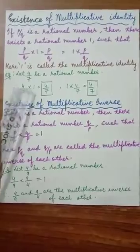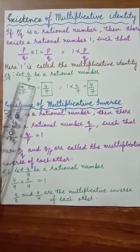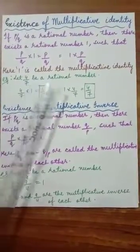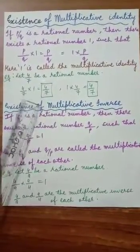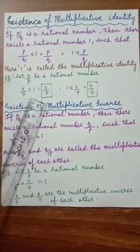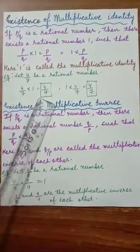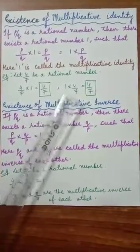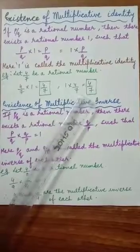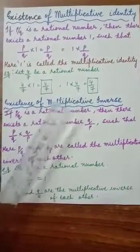Now look at the example. Let 4 by 7 be a rational number. So 4 by 7 multiplied with 1 gives us 4 by 7, or 1 multiplied by 4 by 7 gives us 4 by 7. It's one and the same thing.